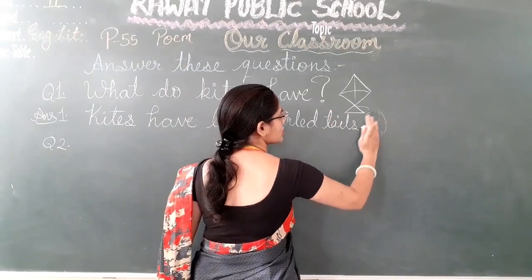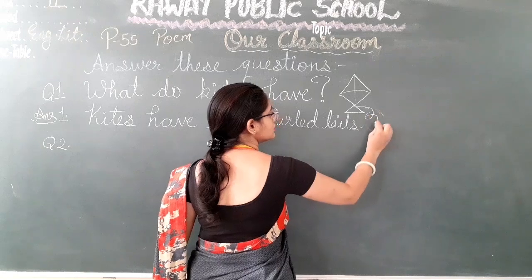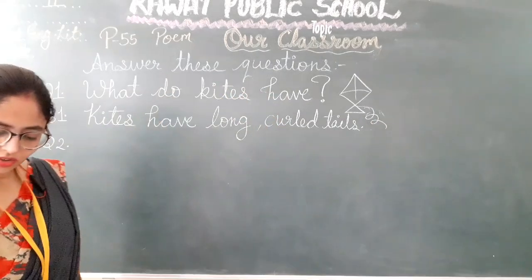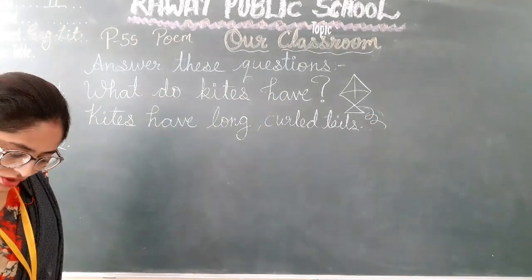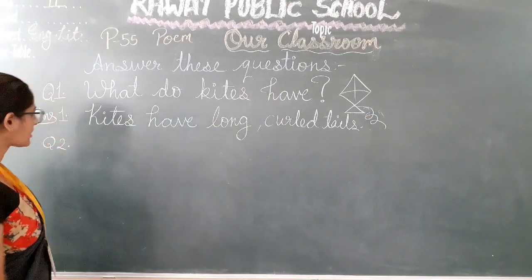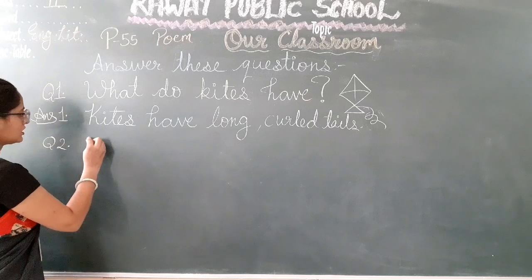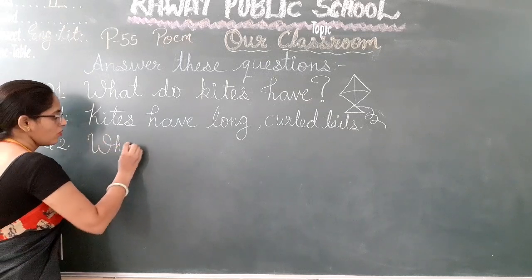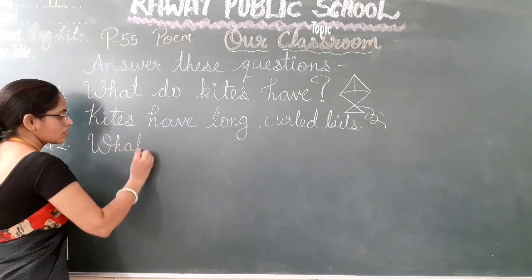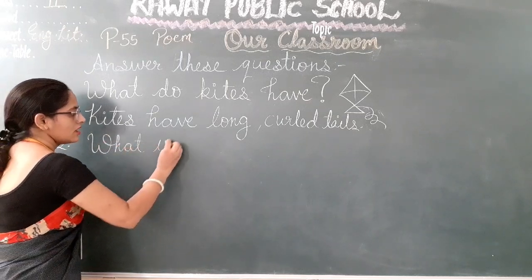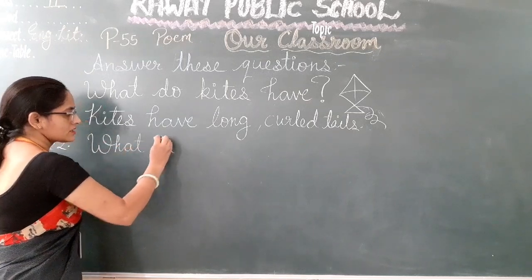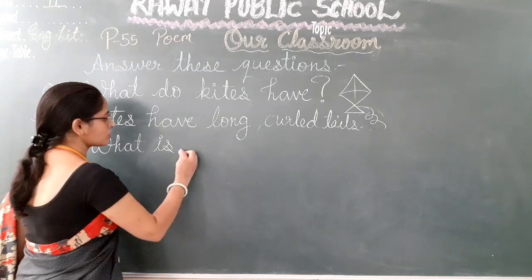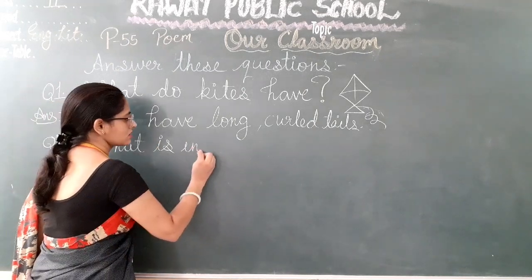Kites have long curled tails. Now the second question is: what is inside the toolbox?